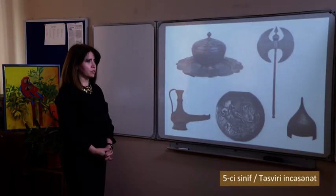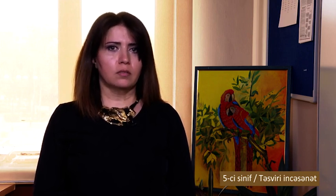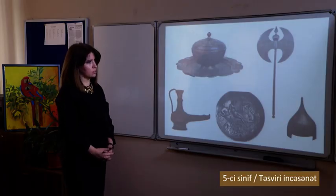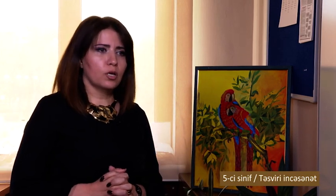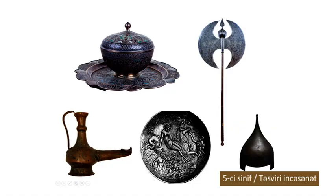Dear students, today we spoke about decorative applied art that has developed in Azerbaijan since ancient times — bədii metal (artistic metalwork). Artistic metalwork is divided into two main types: decorative applied art examples made by forging (döymə) and casting (tökmə). In Azerbaijan, artistic forging reached its peak in the 18th century. The types include: basma, döymə, qarasavat, şəbəkə, xətəmkarlıq, and minatçılıq. I have shown you examples of each of these types here.